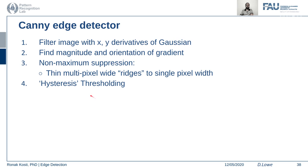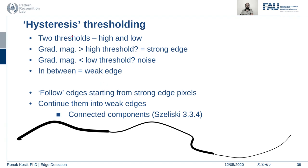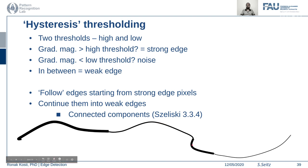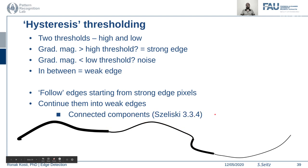The next step in Canny edge detection is hysteresis thresholding. We decide two thresholds: a high threshold and a low threshold, both manually selected. If the gradient magnitude is higher than the high threshold, it's a strong edge. If it's lower than the low threshold, it's considered noise. Any edge between these two values is a weak edge. Hysteresis thresholding connects strong edges with neighboring weak edges by following edges along the direction of strong edge pixels and covering weak edges using connected components.